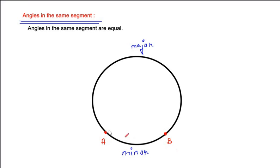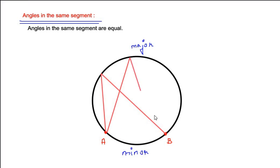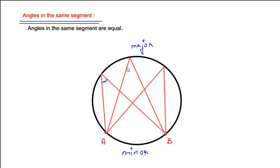If I use these two points A and B and start drawing angles in the major segment, I can draw multiple angles. According to the theorem, angles in the same segment are equal. So if one angle in the major segment is 40 degrees, then all other angles in the major segment are also 40 degrees. Let us now use this theorem to solve the given example.